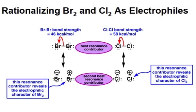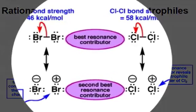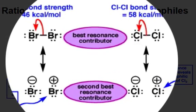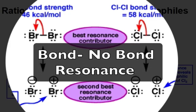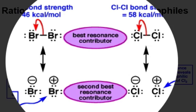Drawing a resonance contributor like this, where we eliminate the bond between these two atoms, might seem odd at first, and in fact this type of resonance has a unique name called bond-no-bond resonance. Notice that each of our atoms stayed in their exact same place in space, and overall ionic charge is conserved. Thus, although they appear different, they are still valid resonance contributors, and by drawing these it is clear where the electrophilic character resides in each of these molecules.